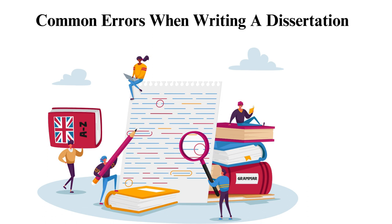5. No connection between thesis and content — developing a good thesis is just one step of the process. As a dissertation writer, you must successfully connect the idea to the presented information. Ensure that your content and thesis complement and support each other. 6. Lack of proofreading — the longer you write, the more likely you are to make errors. These could be spelling, grammatical, or logic errors and can affect your paper's readability and, ultimately, your grade. While tools such as Grammarly can help, a 300-page document could contain several errors, so proofreading and editing services are encouraged.